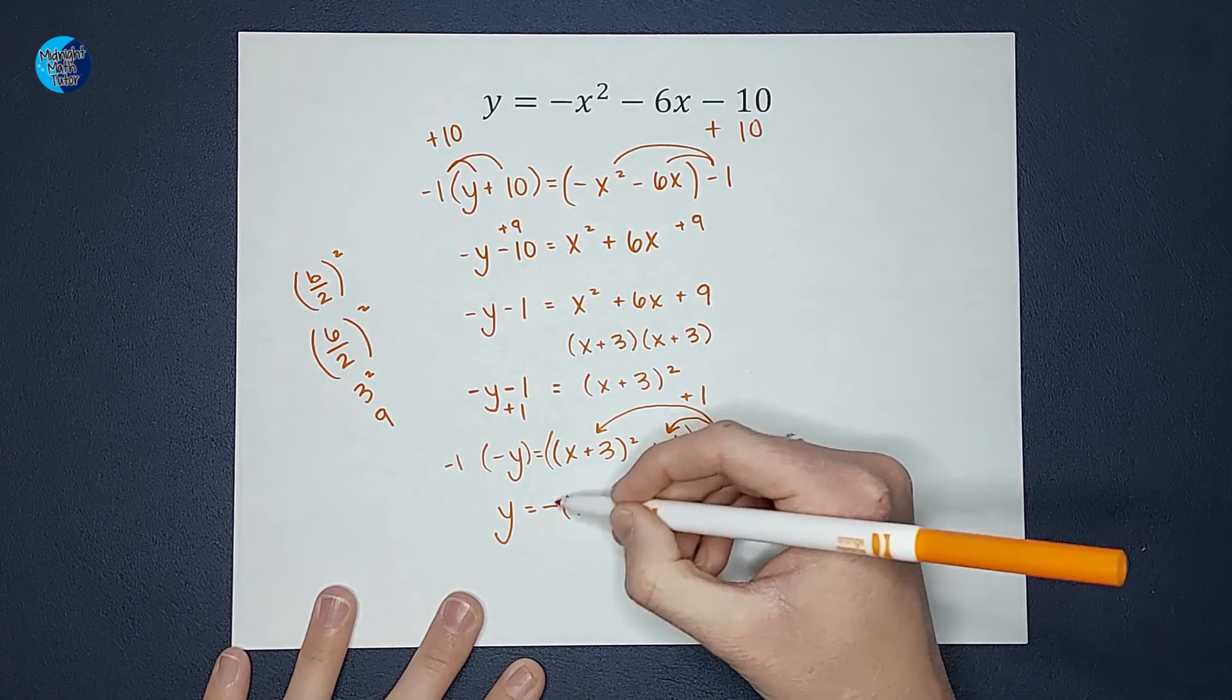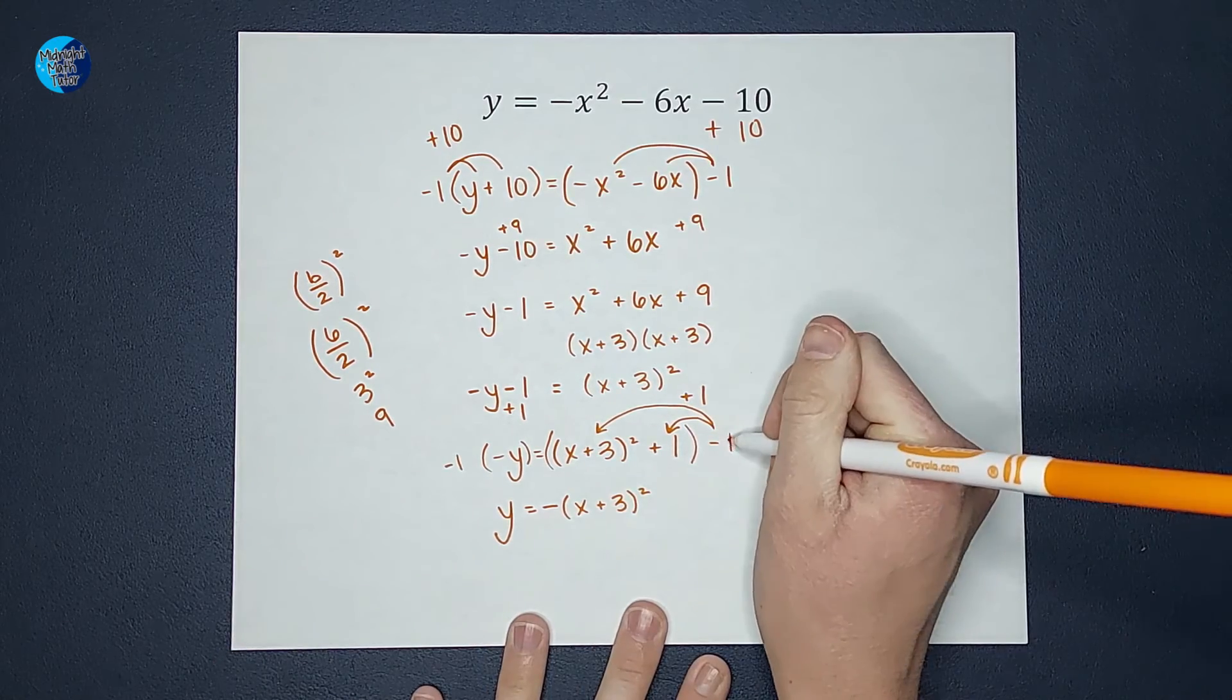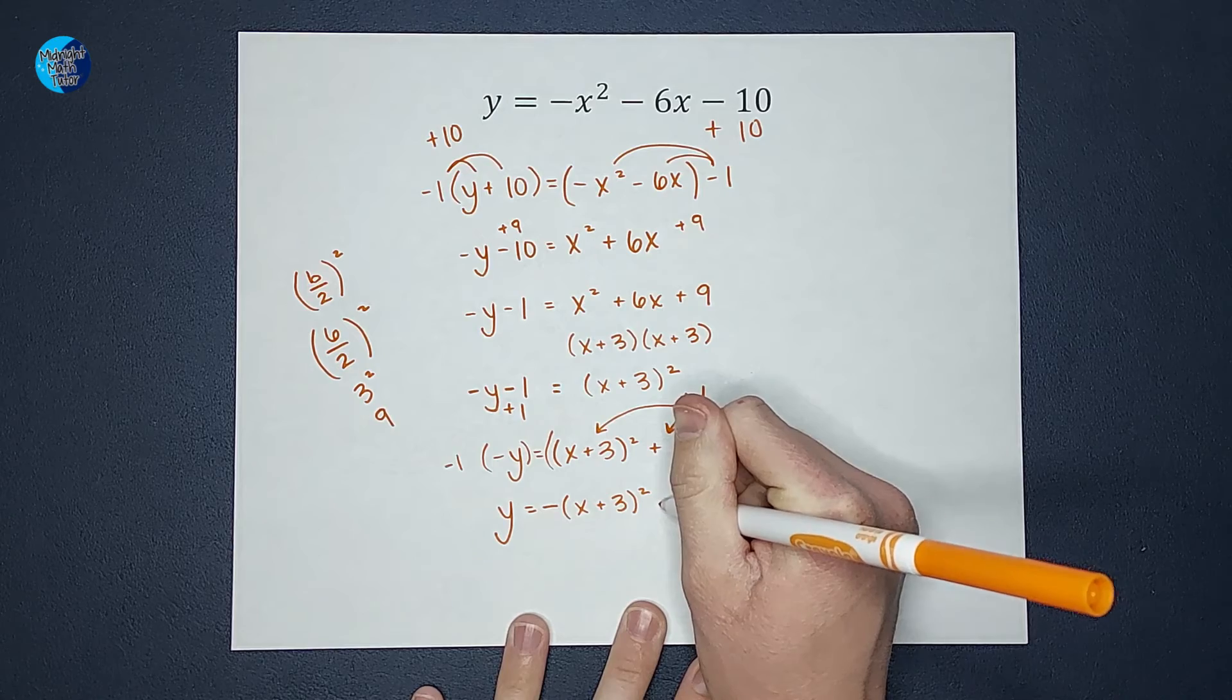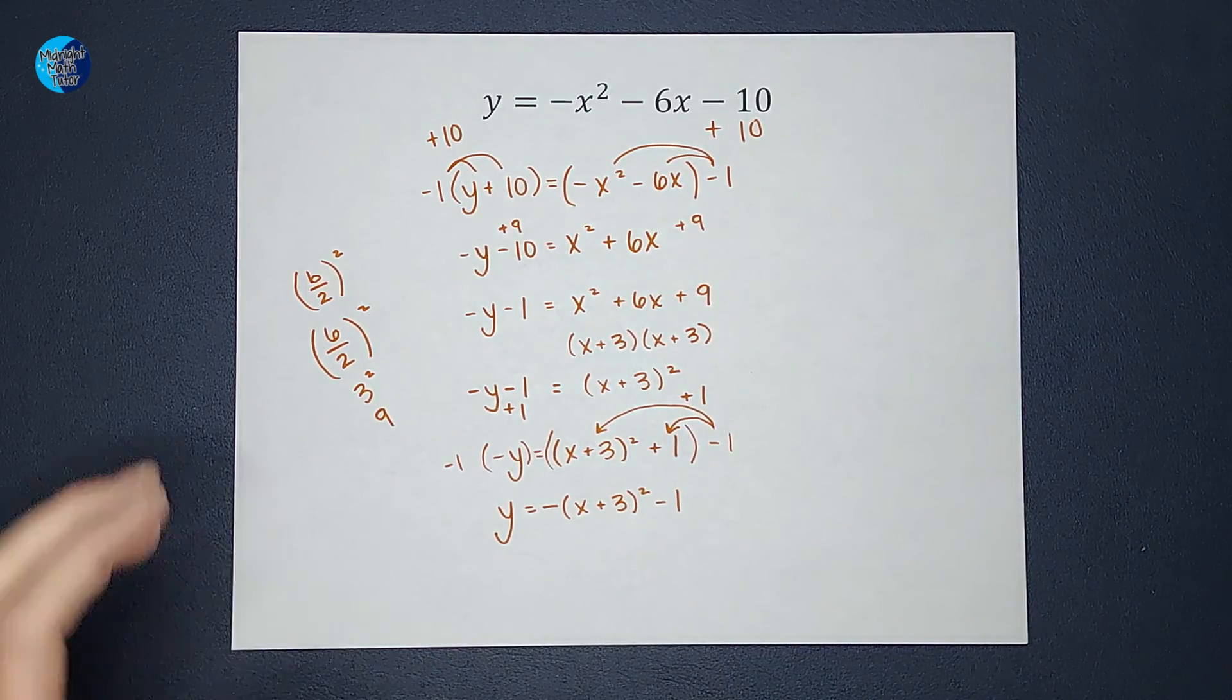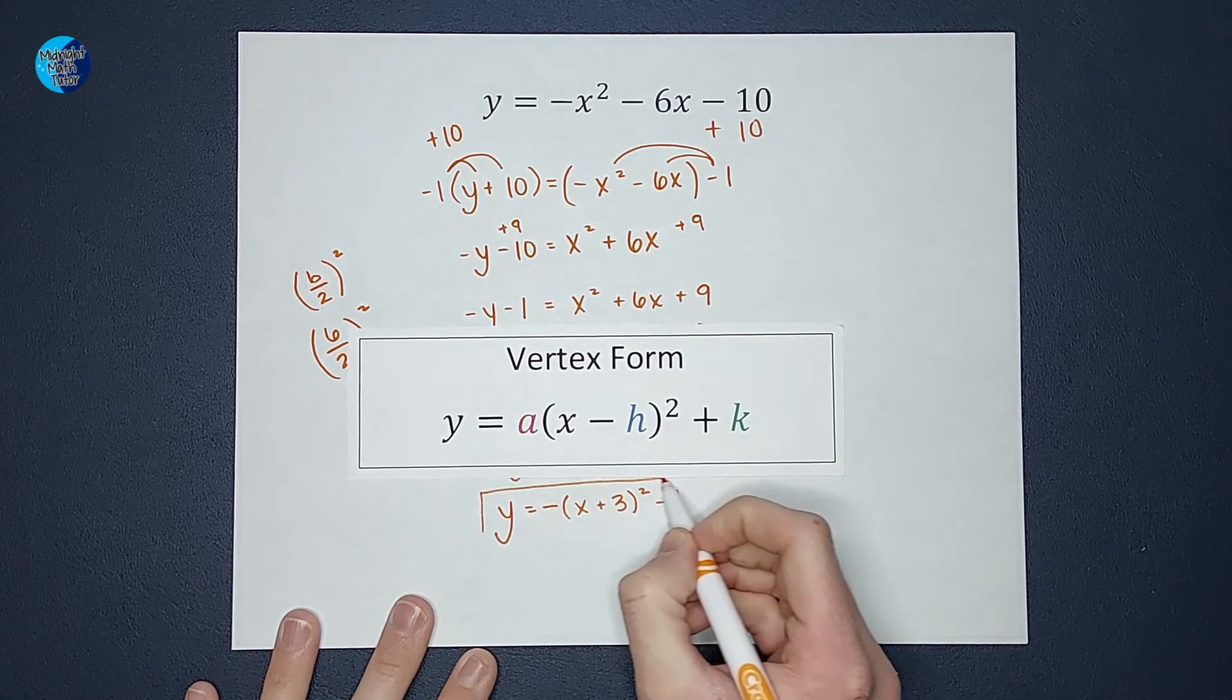Because eventually that negative will need to get distributed in there, but not quite yet. And then the negative 1 times the positive 1 gives me negative 1. And if I compare that to my vertex form, that is looking pretty good.